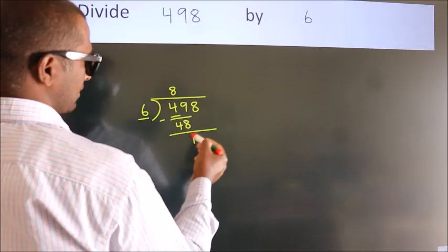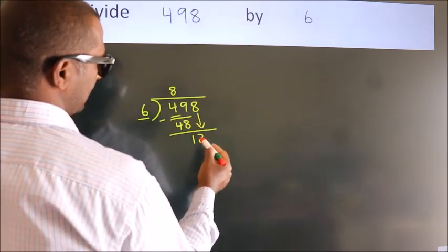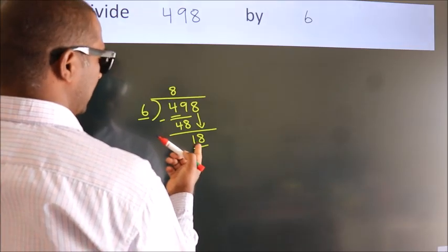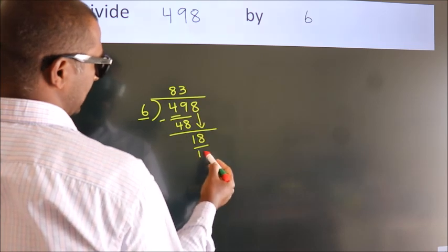After this, bring down the beside number. So 8 down. So 18. When do we get 18? In 6 table. 6 threes, 18.